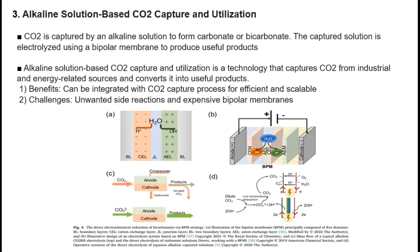Aqueous alkaline capture solutions capture carbon dioxide and then convert it to carbonate or bicarbonate. A bipolar membrane is used to enable electrolysis of the captured solution. Electrolysis of the carbonate capture solution can be performed to convert carbon dioxide into other products. It has the advantage of integrating carbon dioxide capture and electrochemical processes into one device, improving the efficiency and economics of the system.